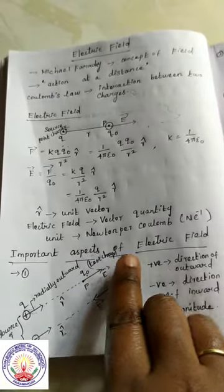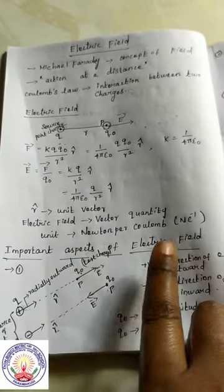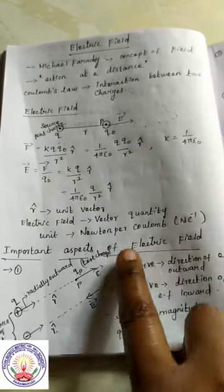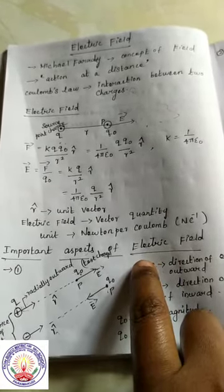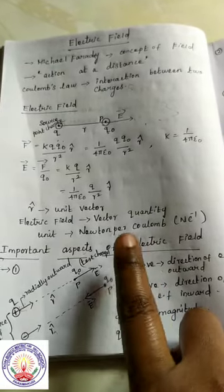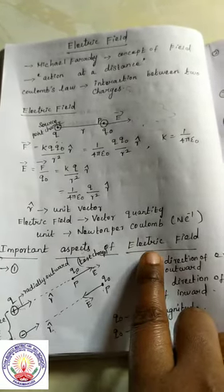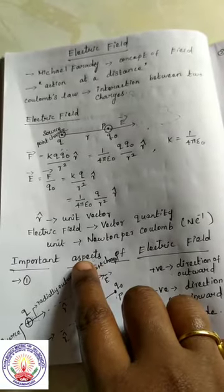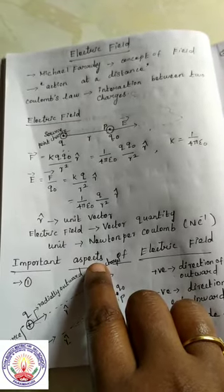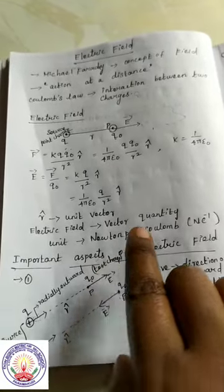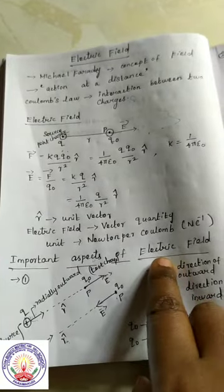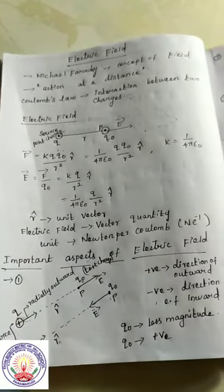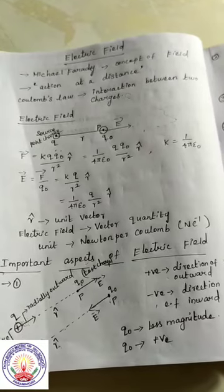The next topic is important aspects of electric field. In Coulomb's law we learned what are the aspects of Coulomb's law. The same term applies here: what is electric field and what are the important aspects of electric field? Aspects means qualities. What are the qualities of electric field? The important aspects of electric field consider totally 7 points. It is a very important 5 mark question.